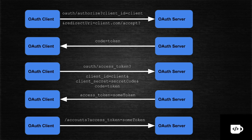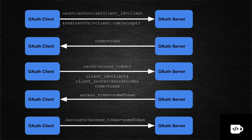Internally, OAuth as a framework is split into two parts: a resource server and an authorization server. The authorization server generates the token, and the resource server uses that token to allow access. OAuth 2 has different implementations — Facebook has one way, Twitter has a similar way — you can write your own implementation. The general concept is: you have an authorization server and a resource server, and access to resources is granted only after authorization.